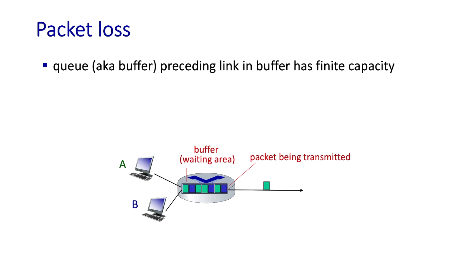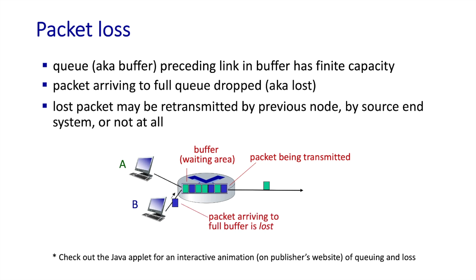We've been focusing on packet delay, but we need to remember that packet loss can also occur when router buffers fill up and an arriving packet has no place to be stored. In high congestion scenarios, losses can be high — sometimes 10 to 20 percent of packets are lost. In Chapter 3, we'll see techniques that hosts can use to detect and recover from packet loss and to control the rate at which they're sending to control congestion.